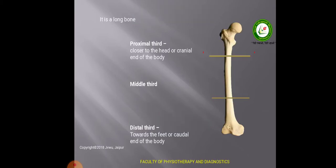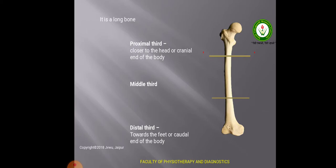Here I am going to tell you about the anatomy of the femur. Femur is a long bone. It is a bone of the thigh. Thigh is the area of the lower limb between the hip joint and the knee joint, that is why it is also known as the thigh bone. Since it is a long bone, it is divided into three parts: the proximal one third, middle one third, and the lower one third. The proximal one third part is closer towards the cranial end of the body, and the distal one third is towards the feet or caudal end, and the middle one third is in between the proximal and the distal parts.